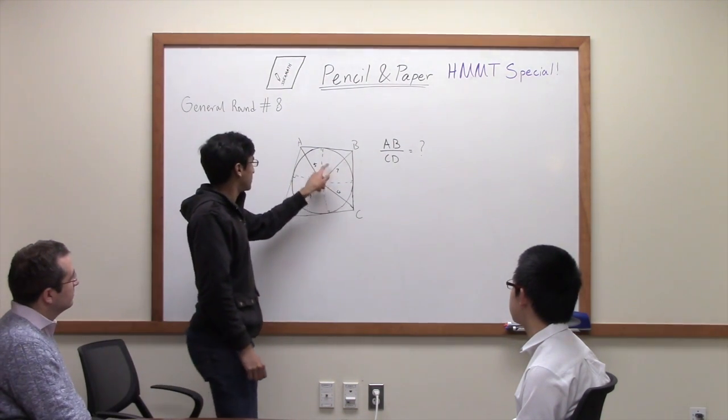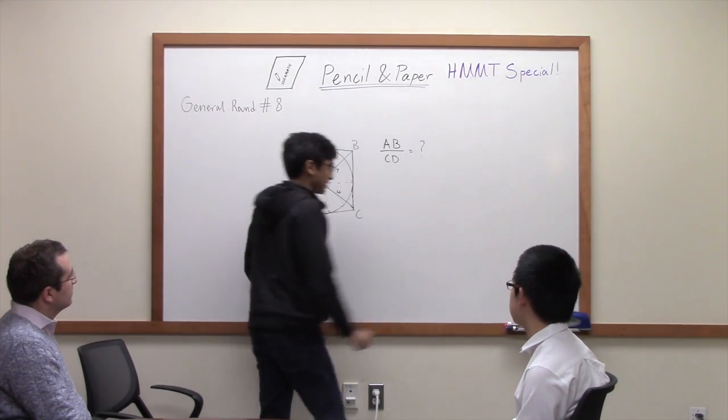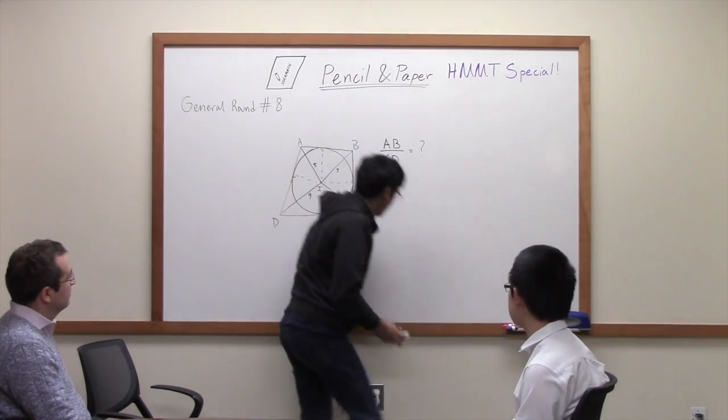So if we draw in these four, then we see that they're all going to have the same height. They're all going to be R.